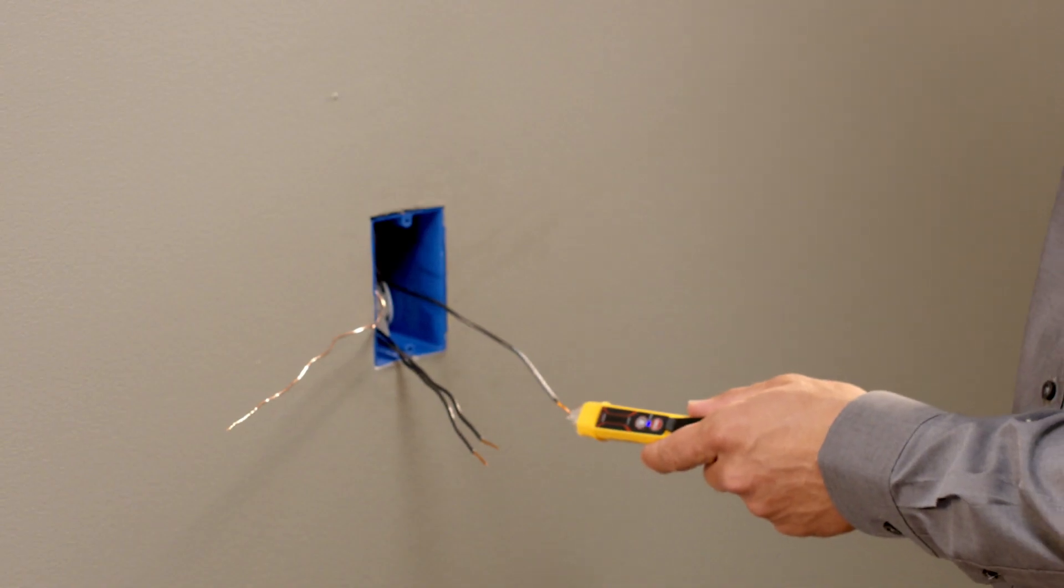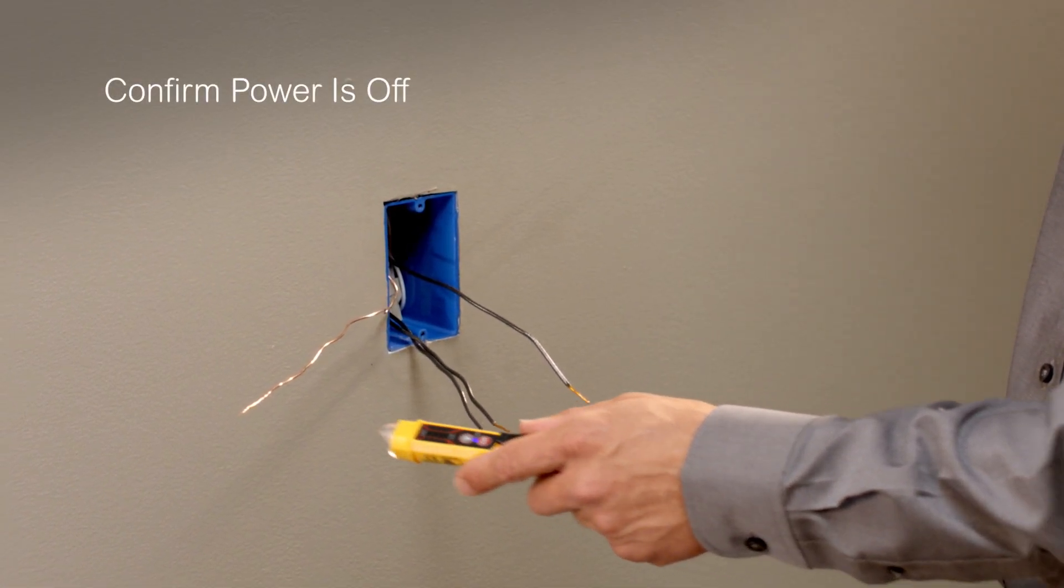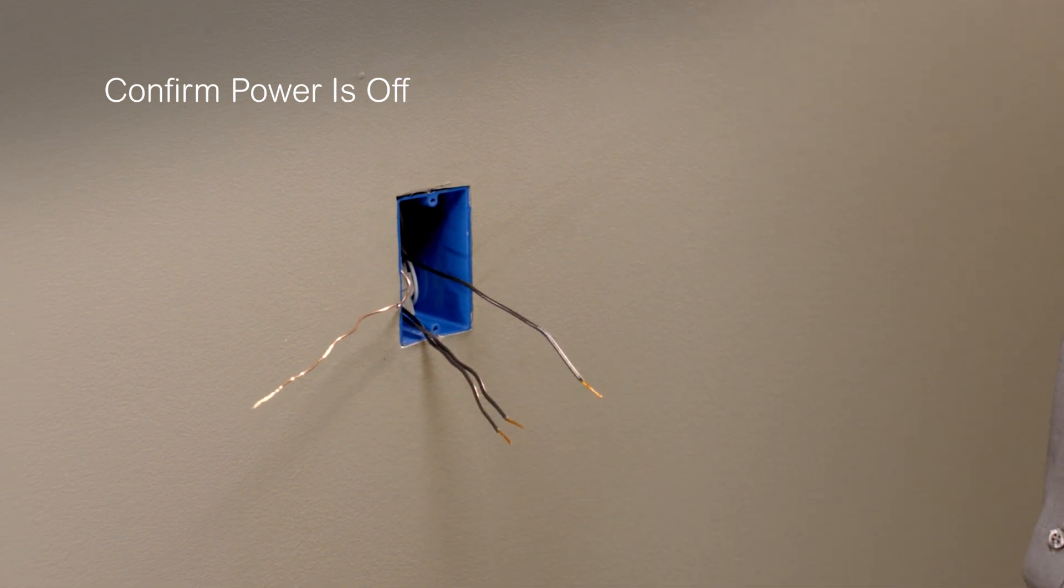Before beginning, ensure the circuit breaker that powers the switch has been turned off at the electrical panel. Confirm it's off using a properly rated voltage sensing device.